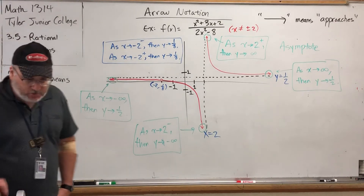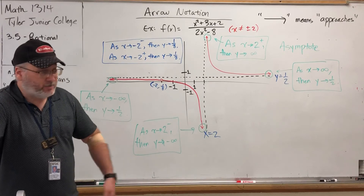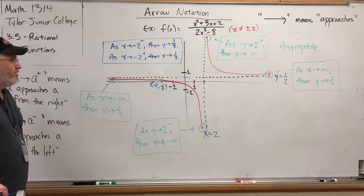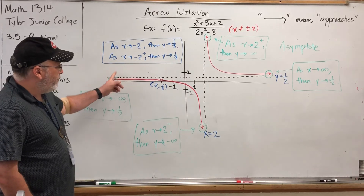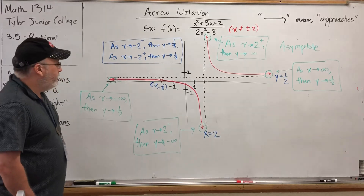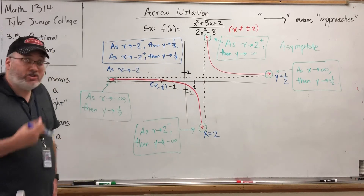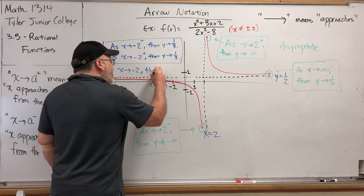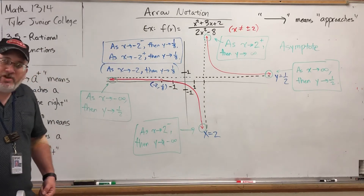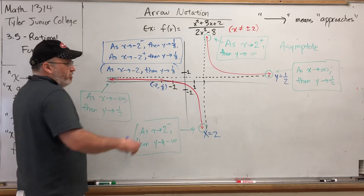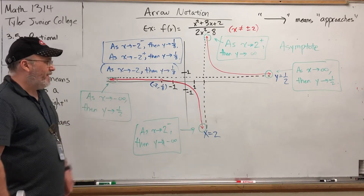For those of you heading towards calculus, you will see this arrow notation very early in the class, and it will be a recurring theme when you discuss a concept called limits. If x approaches a number from the left and from the right and the y values are doing the same thing, then you can say as x approaches negative 2 — without mentioning the direction — y approaches 1/8. If the limit coming in from the left matches the limit coming in from the right, you don't have to specify direction.